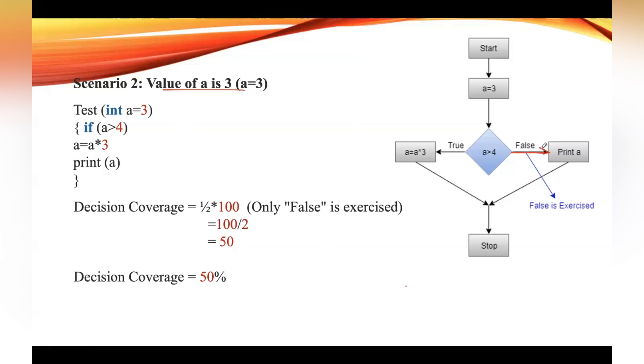In this scenario, only the false part is exercised or gets executed. From this we can calculate again we'll get the decision coverage as 50% as only one part of the code is executed or only one part of the condition is executed.